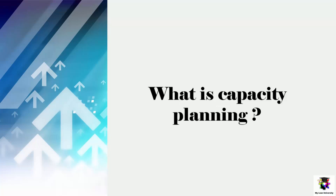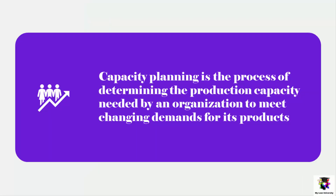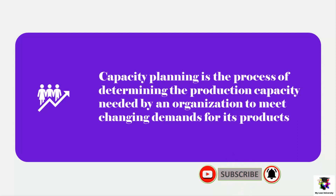Before moving into the steps of capacity planning and learning how to do capacity planning with examples, we need to know what exactly capacity planning is. Capacity planning is the process of determining the production capacity needed by an organization to meet the changing demands for its products. We can implement the same idea to determine the capacity of materials or service hours in other businesses too, when there is a change in demand.